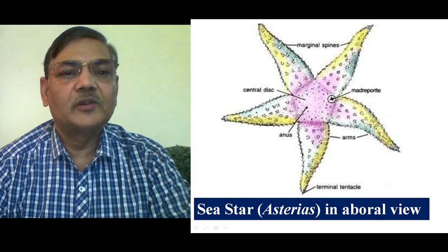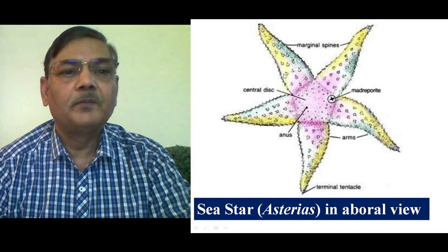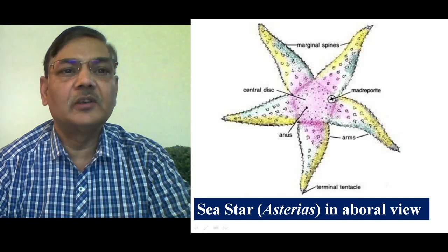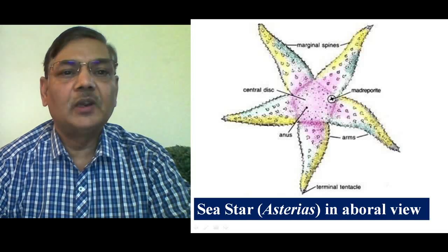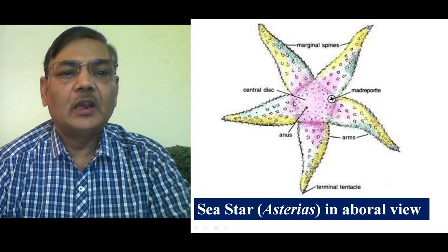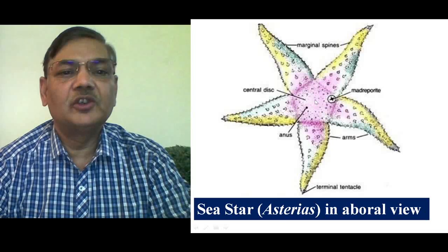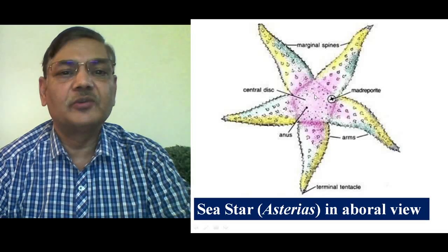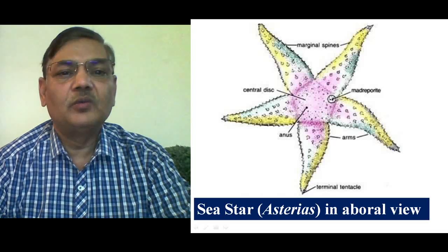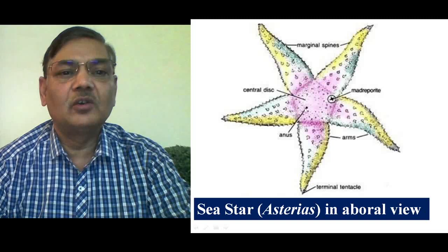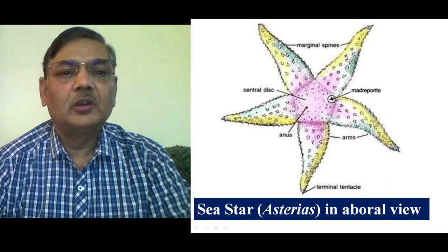This is the aboral surface of starfish. On the aboral surface you can see these small structures protruding outside, which are spines. These spines are present on the marginal area of the arms as well as on the entire aboral surface scattered in a specific manner. We can identify the aboral surface because it is situated on the upper side and does not come in contact with the substratum. There is a sieve-like structure at one side of the central disc called the madreporite, and another central opening is the anal opening. By these structures one can identify the aboral surface of Asterias.